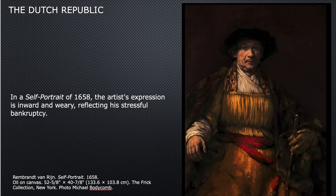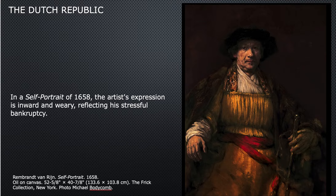Rembrandt also did a series of self-portraits throughout his life. He made a lot of money and supported himself with portraiture, so there are many Rembrandt portraits in art museums around the world. He collected exotic costumes and used them in his paintings — his models would wear them for history paintings, but he also wore the costumes in his self-portraits, which shows a little bit of playfulness. This self-portrait of 1658 shows him dressed in costume, not contemporary clothing.